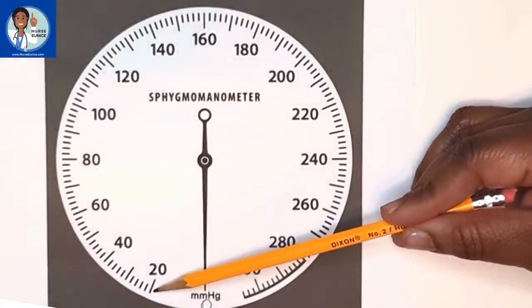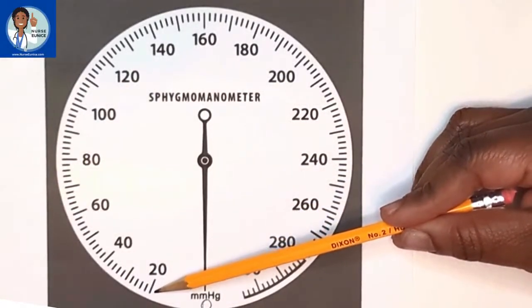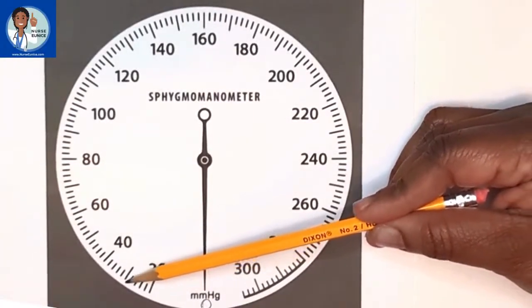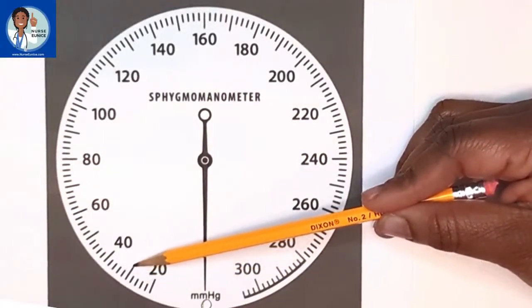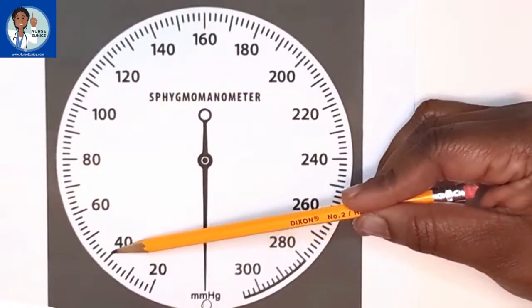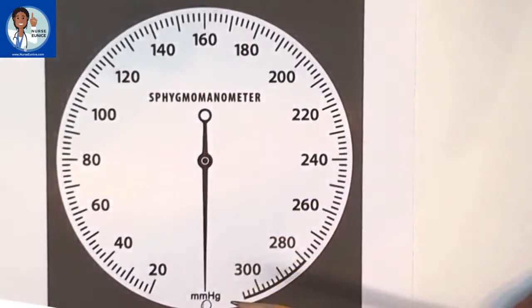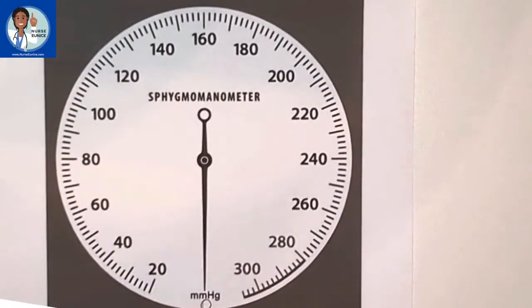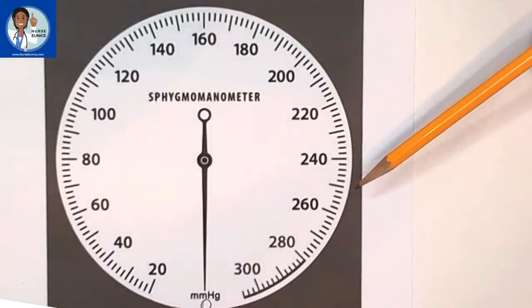Here we have a dark line, a long dark line, followed by four short lines, another long dark line, followed by four short lines, and then another dark line. This is how it reads. Everything's in increments of two. You cannot get an odd number when you're taking a manual blood pressure.